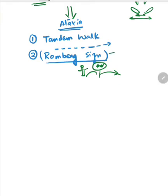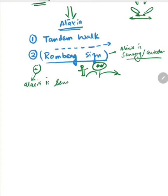What is the significance of Romberg? It tells us whether the ataxia is sensory or cerebellar. If the Romberg is positive, it means that the ataxia is sensory.